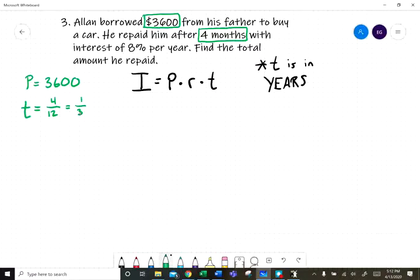And then the interest rate of 8% per year. Remember, we have to convert the percent to a decimal, so divide by 100: 0.08.